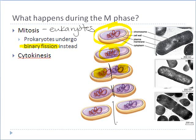In eukaryotes, the series of events is more complex because the DNA is housed inside a nucleus. We've got to get into that nucleus and divide out multiple chromosomes — there's not just one chromosome like in prokaryotes. We must make sure each daughter cell gets exactly a complete copy of the DNA. The events of mitosis are really the events that outline what we call nuclear division — the dividing up of the contents of the nucleus.